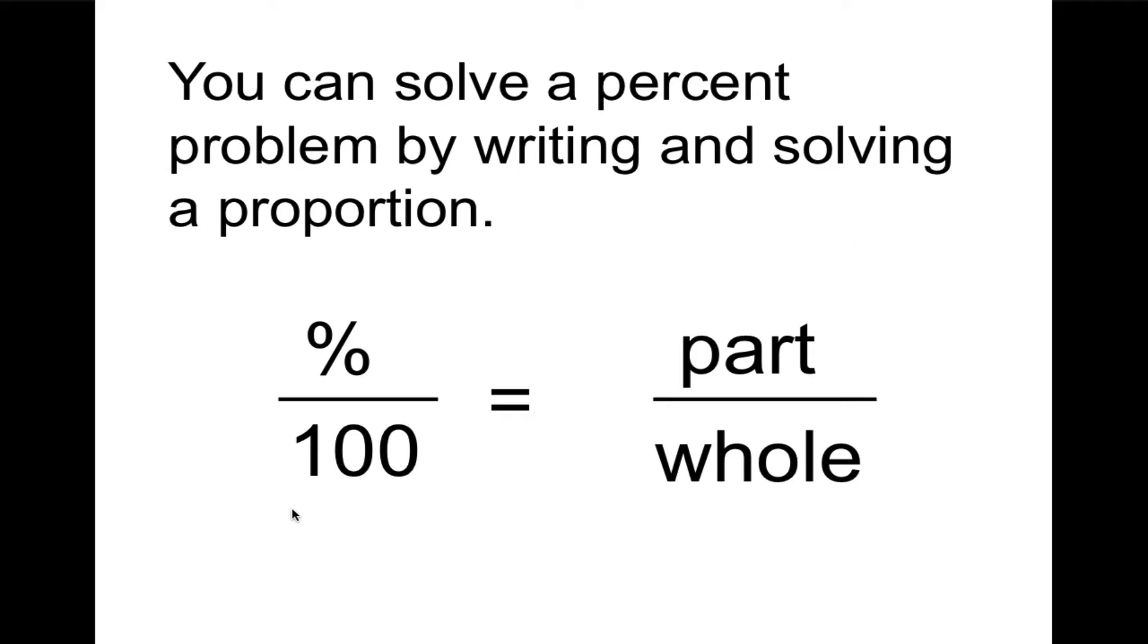Now there's some clues to help you find the part and the whole in a word problem. So we're going to say get a clue. Is is the clue that you're going to use to find the part, and of is the clue for finding the whole. So in general, we're going to set up all our problems like this: percent over 100 equals is over of. And then we're going to fill in the missing numbers.